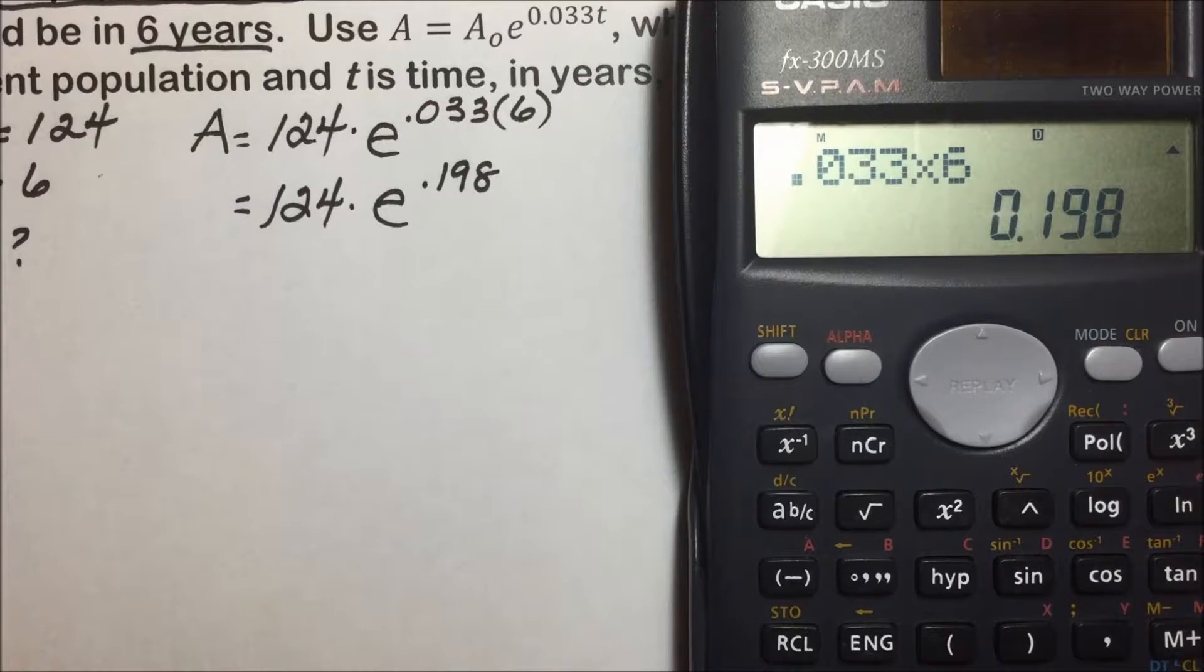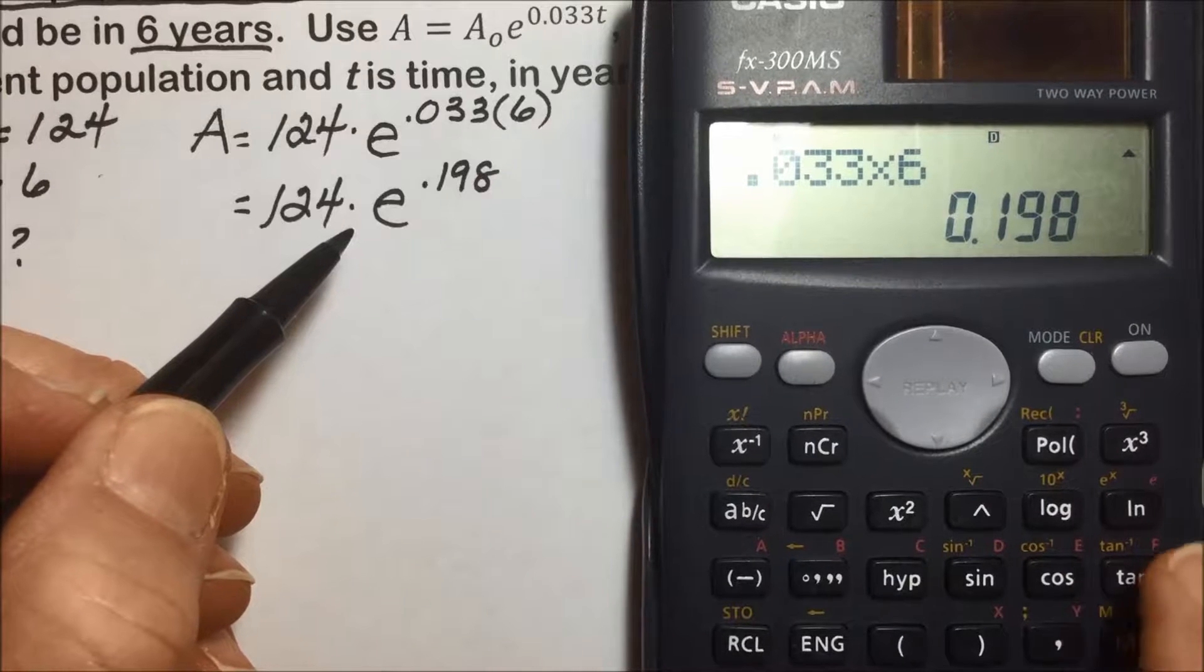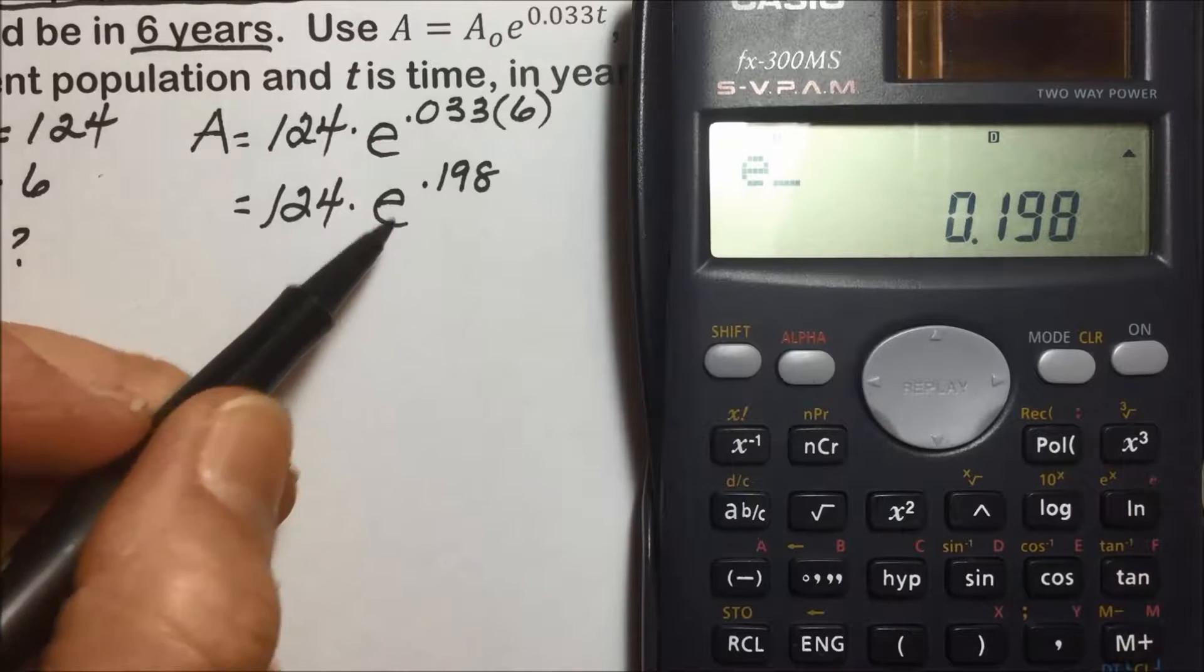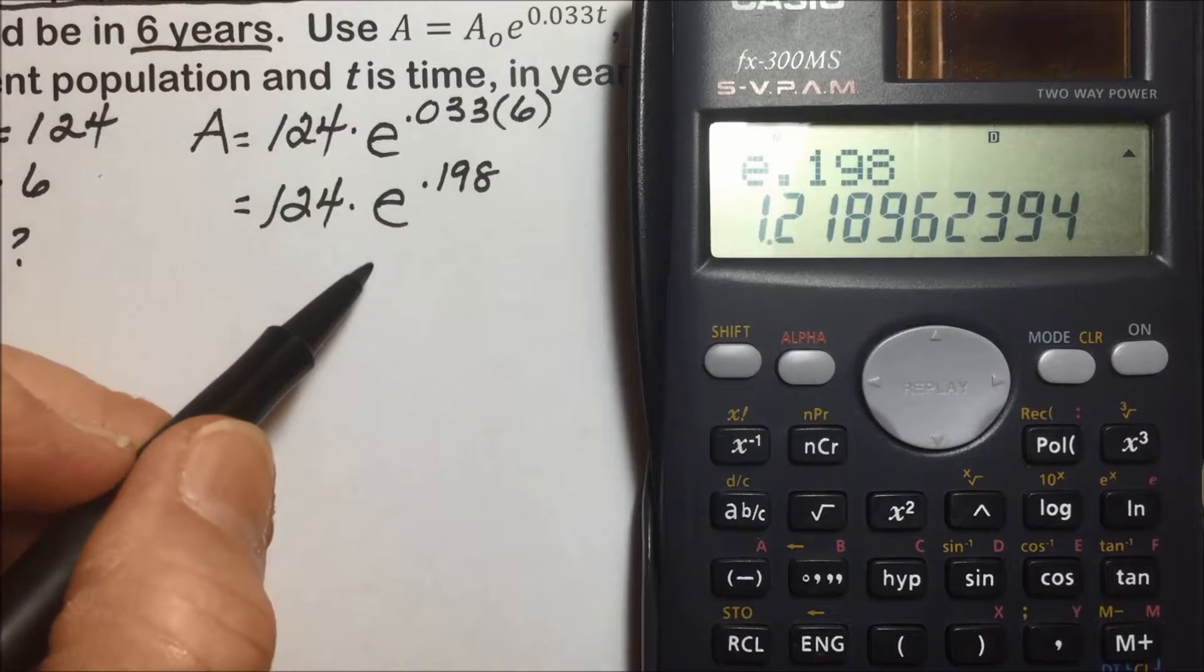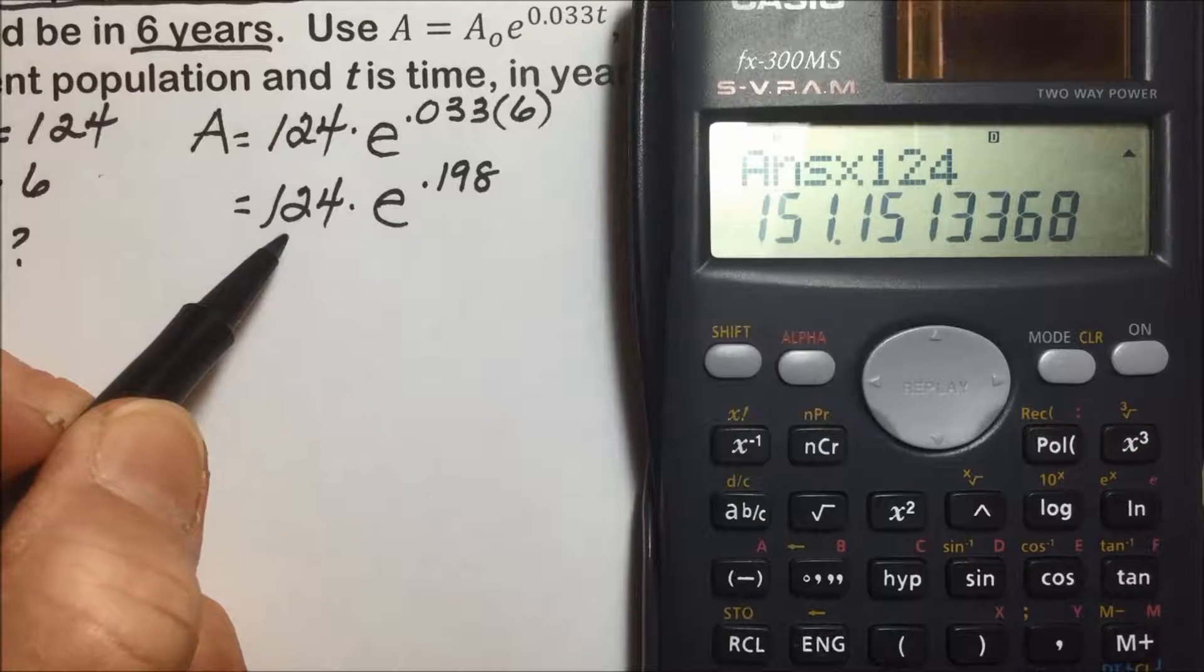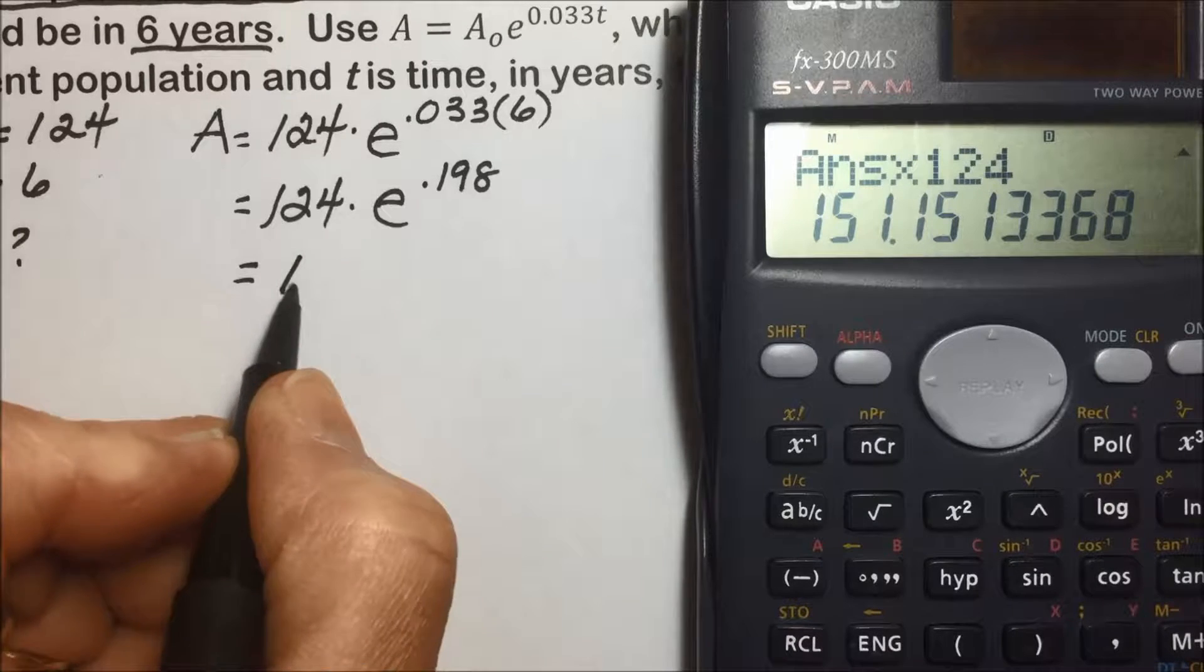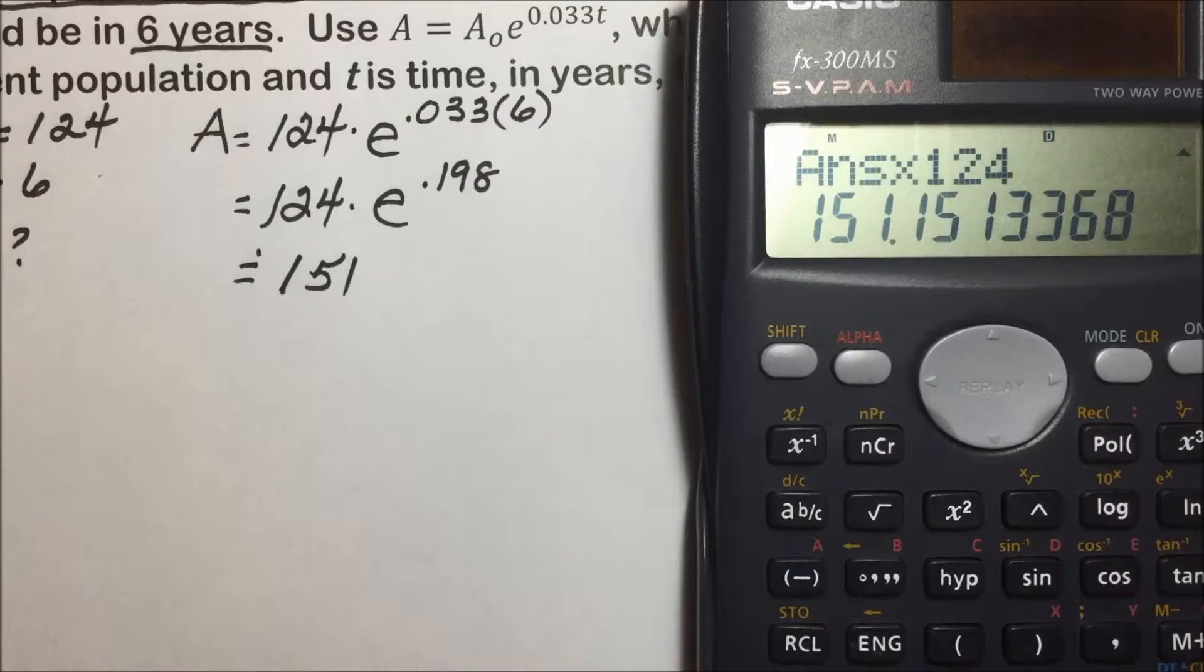So we have 124 times e to the 0.198 power. Following order of operations, we'll do our exponent first. And to get to e, that's the inverse operation of natural log, so shift natural log to the 0.198 power times 124, the last operation, is going to give us the population after 6 years for this deer herd, so 151 again if we're rounding to the nearest whole number.